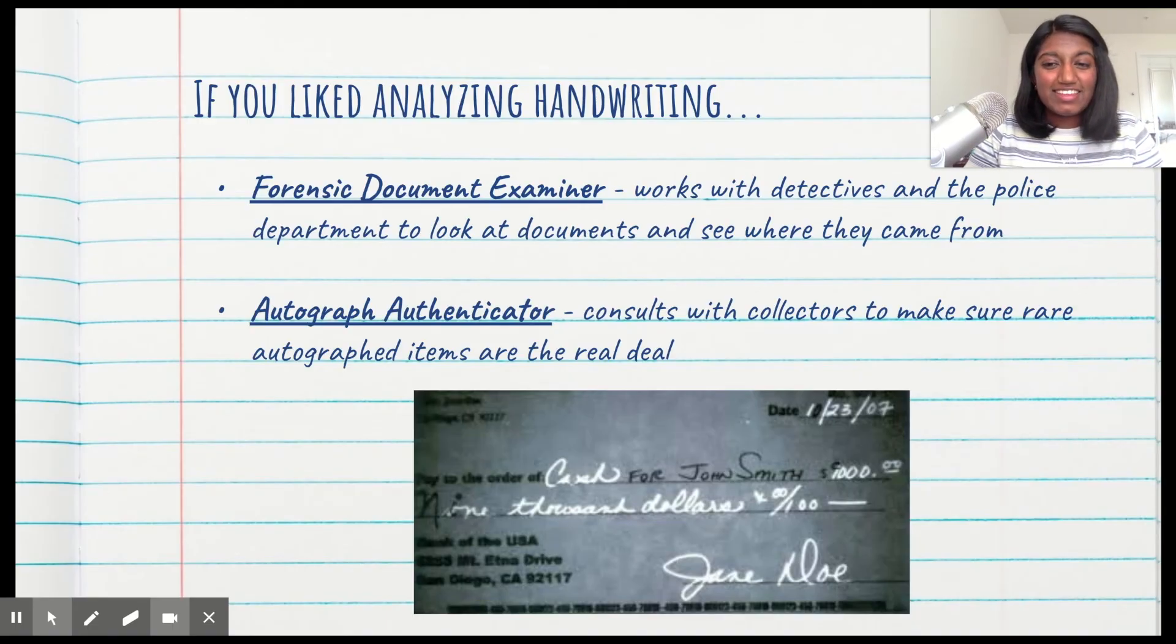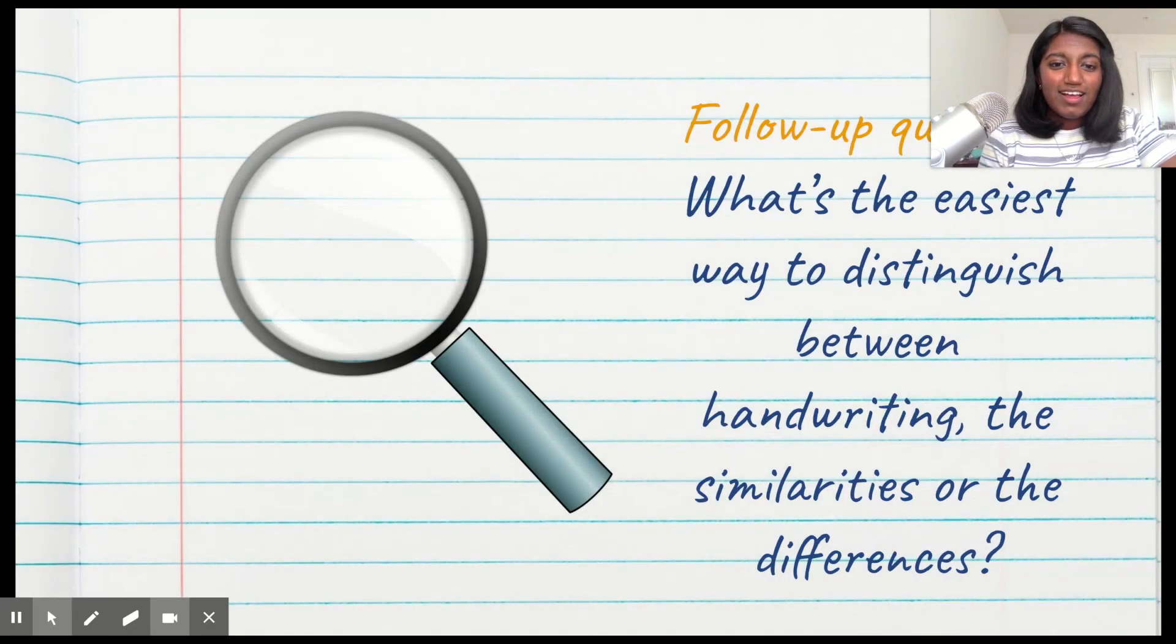And that brings us to the end of this video. If you liked analyzing handwriting, you might want to think about these occupations as a job for the future. One is the forensic document examiner that we talked about—they work with detectives in the police department to look at documents and see where exactly they came from. However, another one that might be a little bit more untraditional is an autograph authenticator who consults with collectors to make sure rare autographed items are the real deal. For example, let's say I got this shirt signed by my favorite artist, Harry Styles, and I want to sell this on eBay because I want to make money. An autograph authenticator will need to come over, look at the shirt, make sure that signature is the real deal, and then they'll give me a certificate that will be attached to my shirt when I sell it. That makes sure there's no fraudulence happening.